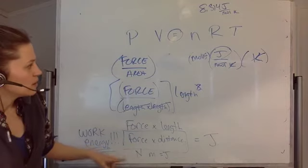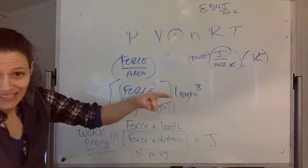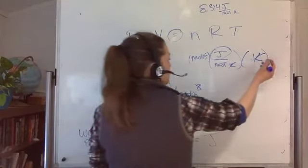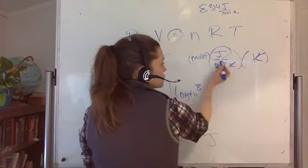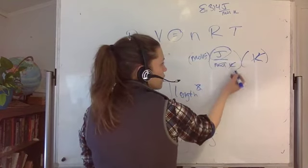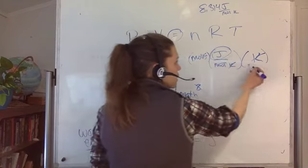So then if we go then to the right-hand side, this means that we've got a temperature associated, so joules per Kelvin. For every Kelvin, we have a certain number of joules. Well, how many Kelvins do we have? Well,